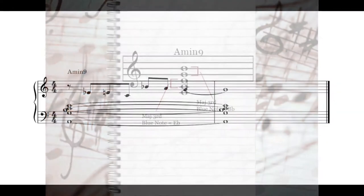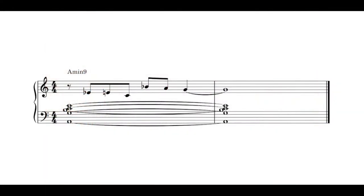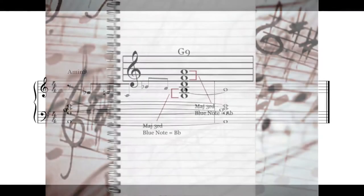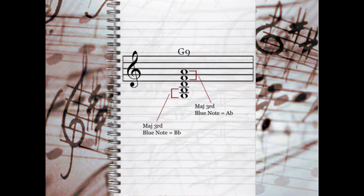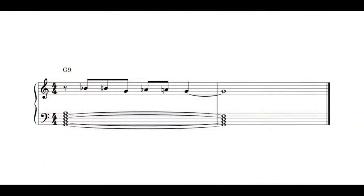This also sounds just fine. On the G dominant 9th chord, we get the usual G to B major third, giving us the Bb blue note. But more importantly, we also get a major third interval between F and A — the b7th and the 9th. So we get the blue note movement Ab to A, b9 to natural 9, and this sounds great too. I'm getting a bit of a ragtime sound from this one.